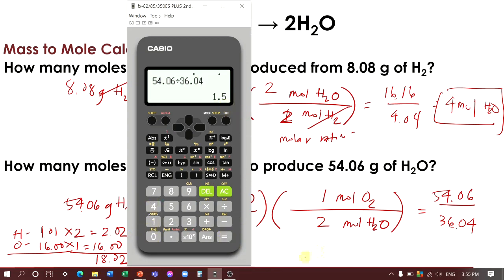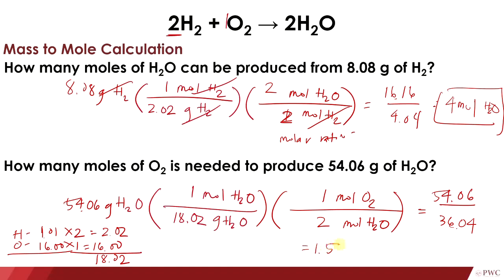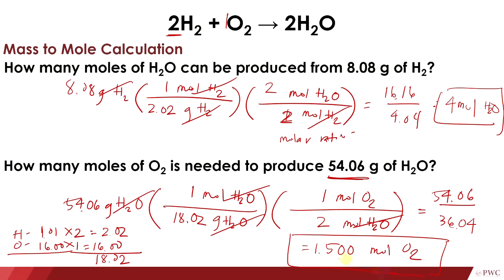The answer is 1.500. The given has 4 significant figures, so we need 4 significant figures in our answer: 1.500. Cancel gram of H₂O and mole of H₂O; what's left is the number of moles of O₂. The answer for this item is 1.500 moles of O₂.